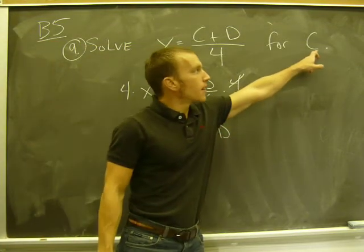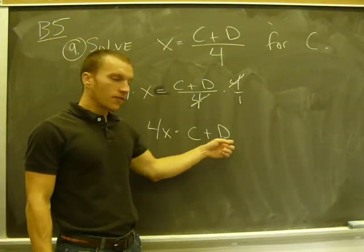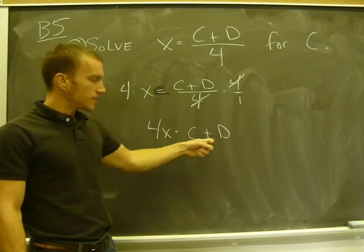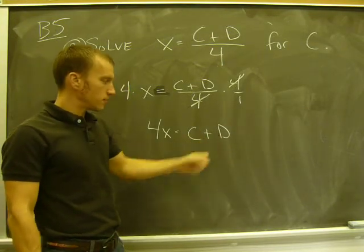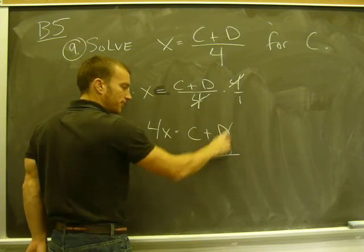Remember, always keep in mind what you're trying to solve for. Trying to solve for C. So I can get C by itself if I get rid of the D. In this case, it's going to be subtraction because it's added to the C. So if I subtract D, D minus D is zero. So that's gone.